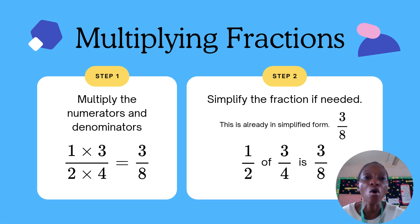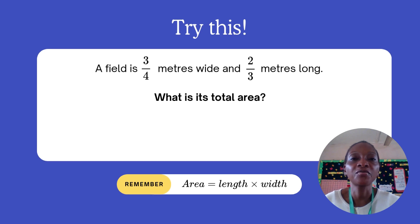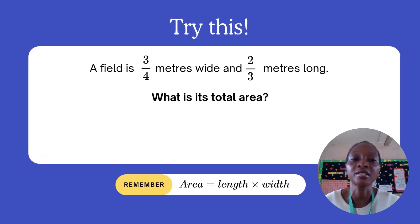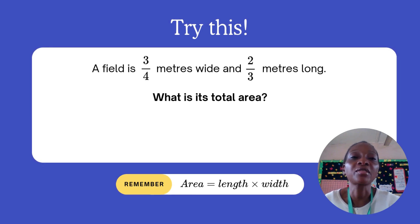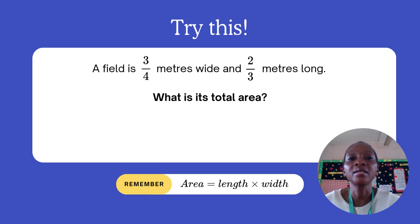Now try this: a field is three over four meters wide and two over three meters long. What is its total area? Remember, area equals length times width.